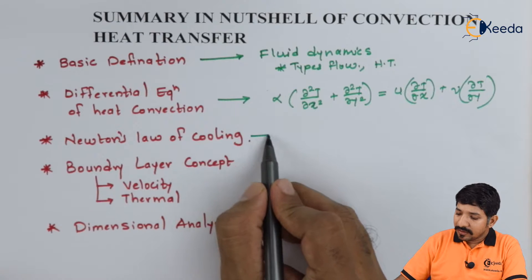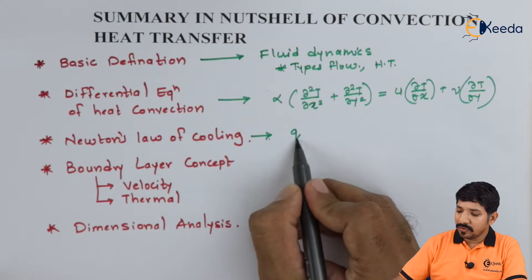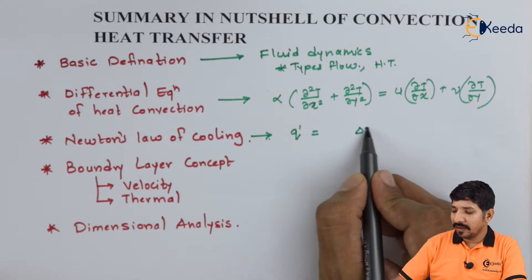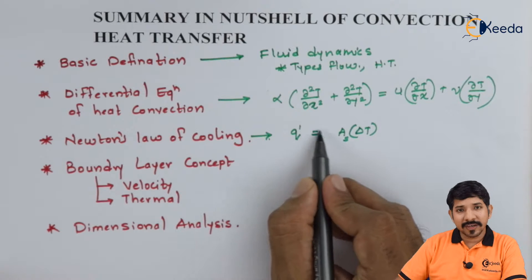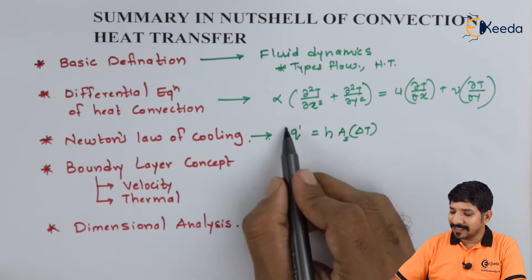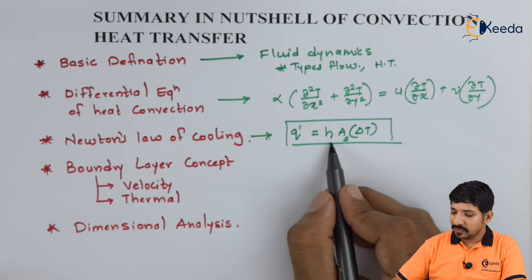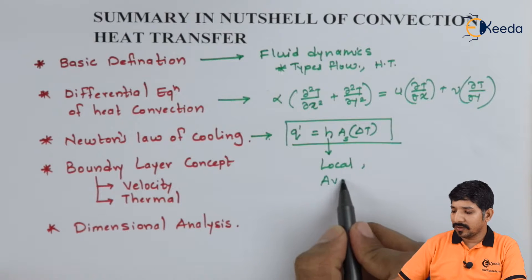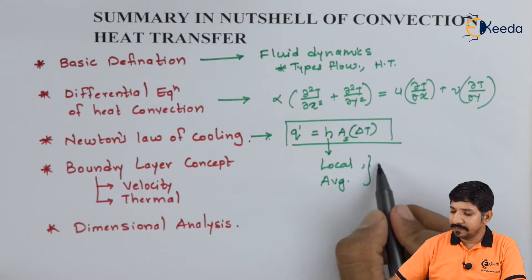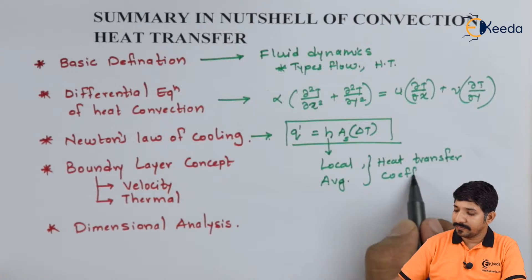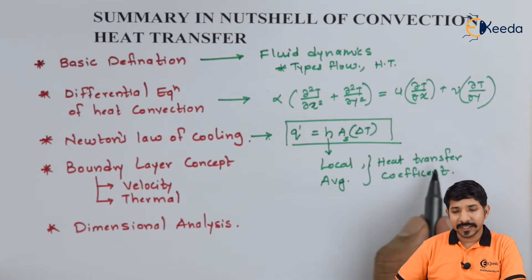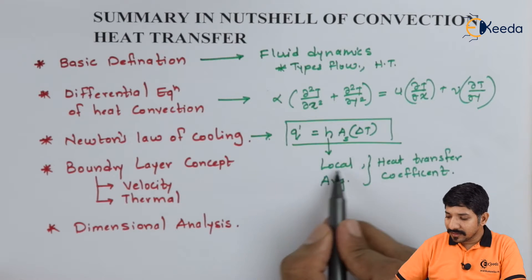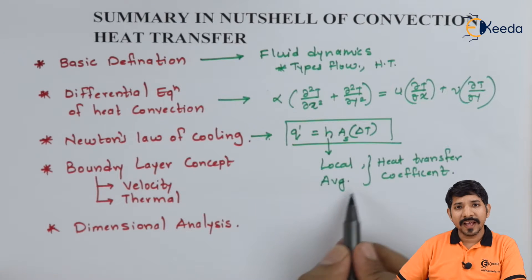The next topic was Newton's law of cooling, which states that the heat transfer rate is directly proportional to the change in temperature and the surface area. The proportionality constant is replaced by h, the heat transfer coefficient. We discussed that h has both a local value and an average (global) value — for a small point it is a local value, otherwise it is an average value.